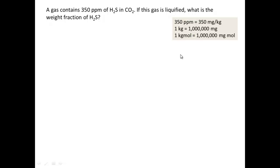Firstly, we must understand what is ppm. ppm is parts per million. 350 ppm is like 350 mg per kg. 1 kg is 1 million mg. We can associate this with kgmol. Then 1 kgmol is 1 million mgmol.